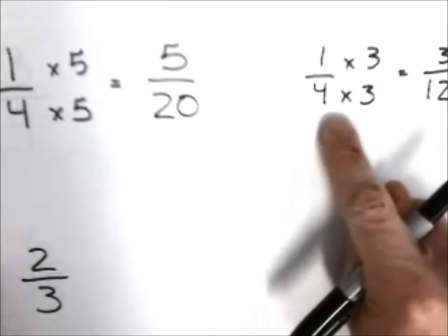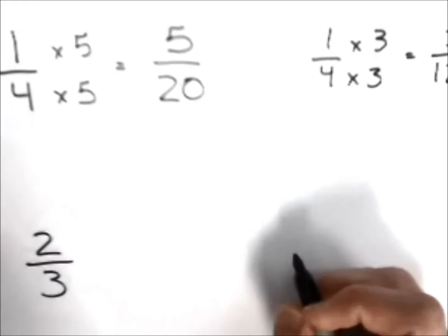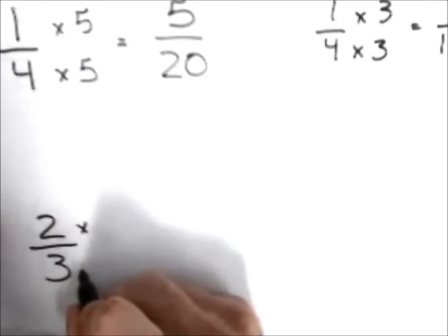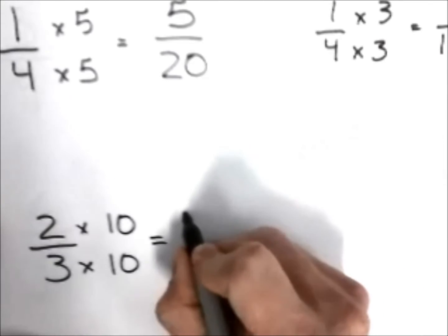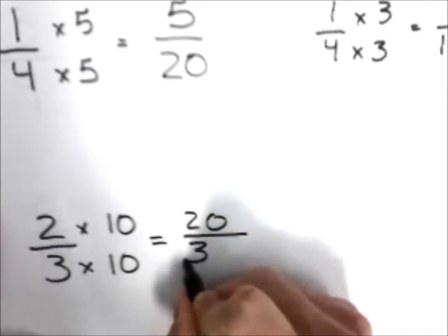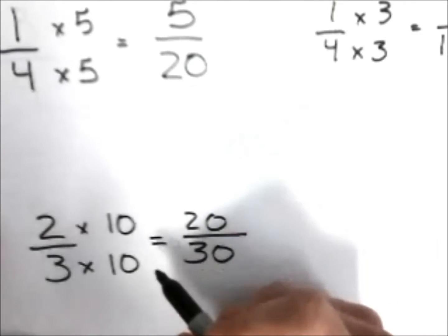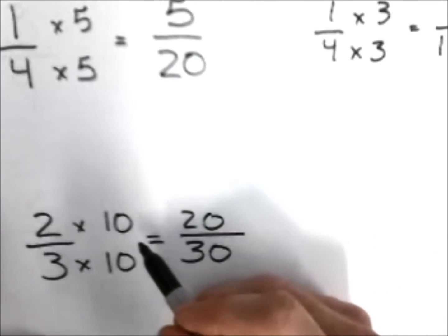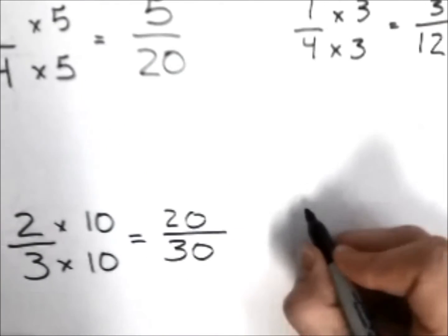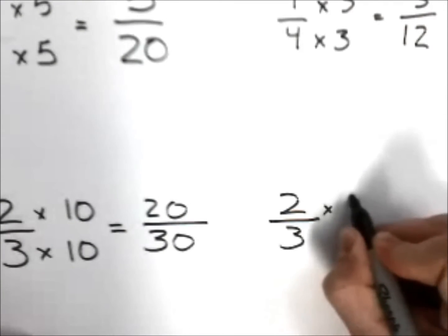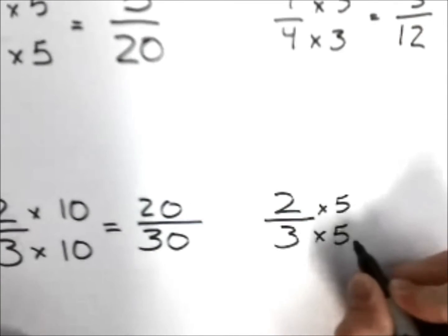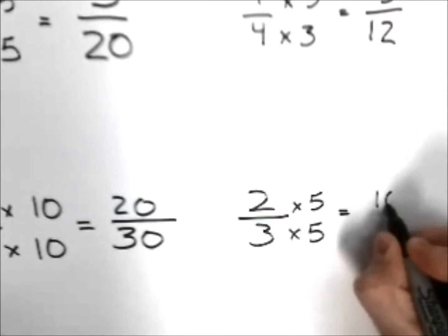On the bottom here I have two-thirds and I am going to multiply both of these by 10, and that will give me twenty-thirtieths. These are equivalent because we did the same to the bottom as the top. I'm going to take two-thirds, and why don't I use five again—that's just a good round number—and we would have ten-fifteenths. These are all the same because we did the same to the bottom as the top.